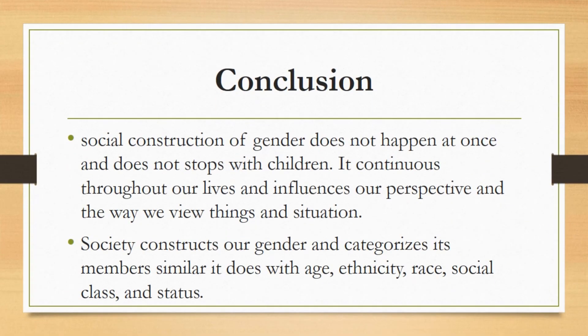Conclusion. Keep in mind that social construction of gender does not happen at once and does not stop with children. It continues throughout our lives and influences our perspective and the way we view things and situations. Society constructs our gender and categorizes its members, similar to how it does with age, ethnicity, race, social class, and status. It is basically society which constructs gender identity.